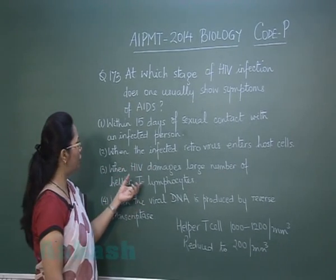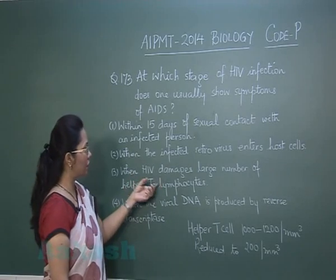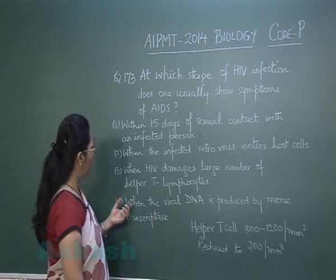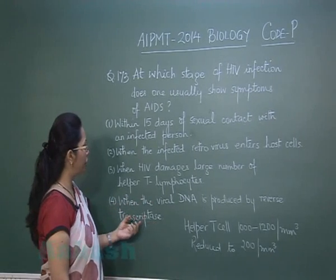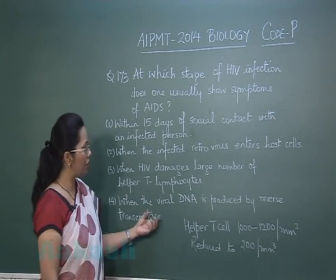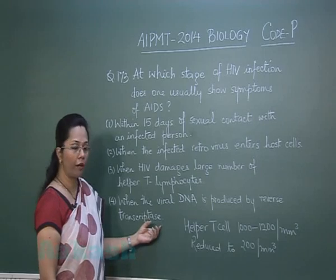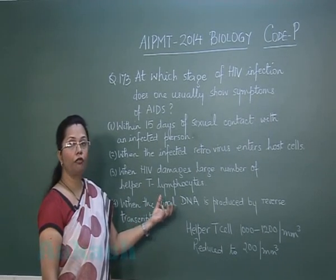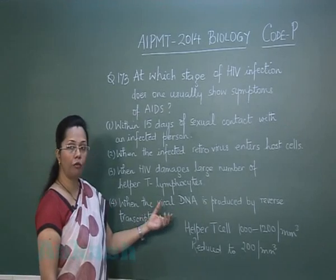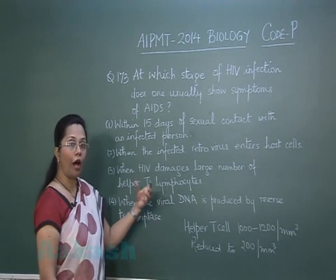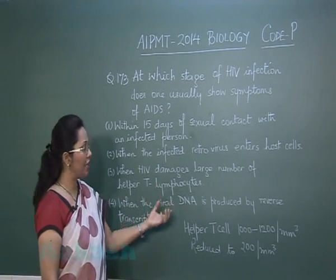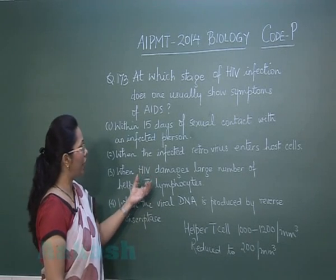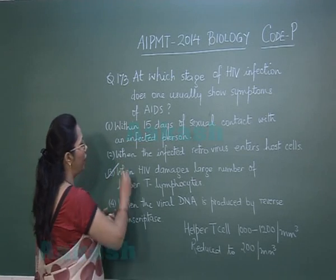Option three — when HIV damages a large number of helper T lymphocytes — aligns with what we know. Option four — when viral DNA is produced by reverse transcriptase — is an initial step; once viral DNA is formed, it integrates with the host DNA and starts making viral proteins, so cells will only slowly begin to be damaged after that.